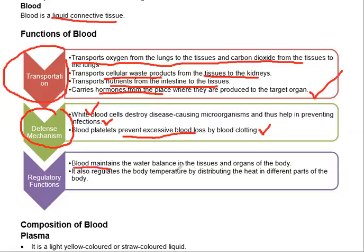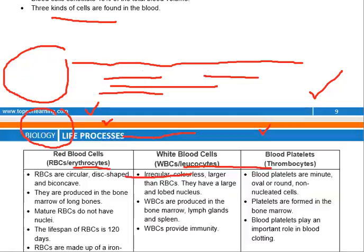Blood maintains the water balance in the tissues and organs of the body. It also regulates body temperature by distributing heat to different parts of the body. Blood is basically a fluid tissue, so it also takes care of the osmolarity of the tissues and helps to keep our body warm, regulating body temperature.